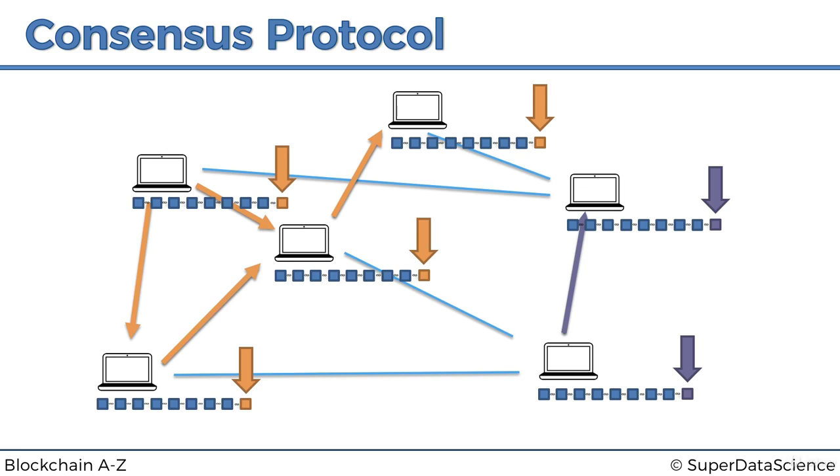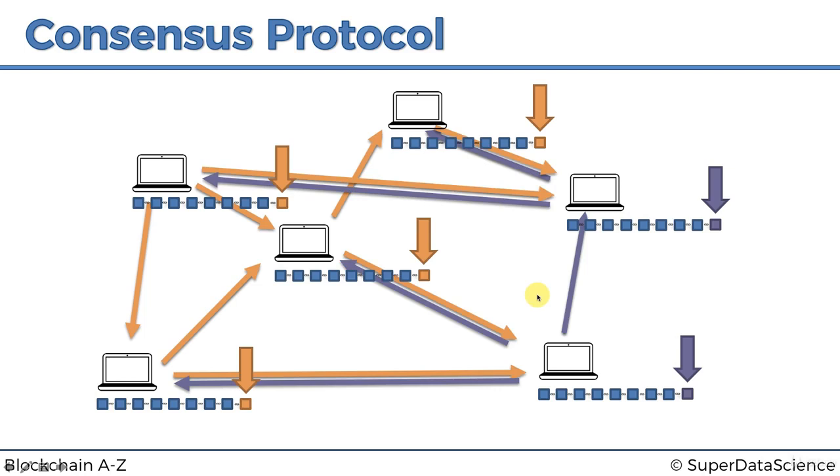Now what happens is this node and these nodes are trying to tell this node, okay, add this orange block. But this node is saying to these guys, no, you add the purple block. Orange block, add the orange block. No, add the purple block. Finally the connections gone through, so you can see we got an issue. Here you can probably tell that it's very similar to the Byzantine generals problem when you got conflicting messages going across the network.